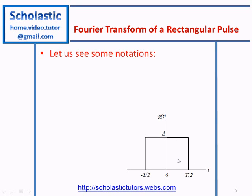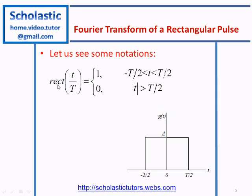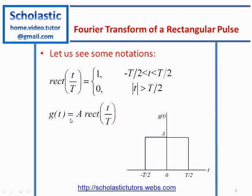Let's look at some notation. If a rectangular pulse is given from minus T/2 to plus T/2 with amplitude A, we can write a rectangular function rect(t/T), which equals 1 between minus T/2 and plus T/2, and 0 otherwise. Here T is the width of the pulse and the height is 1. In our case we have amplitude A, therefore we can write g(t) equal to A times rect(t/T), which represents a function with amplitude A between minus T/2 and plus T/2.